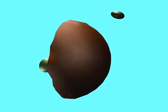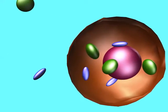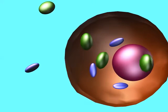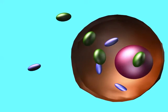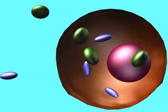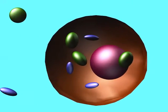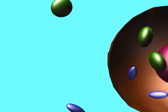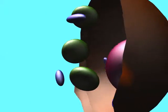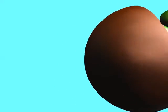Eukaryotes owe their origin to an endosymbiotic event, where cells began to live inside a larger cell in a mutually beneficial relationship. The endosymbionts became the mitochondria, which would help the eukaryotic cell break down its foodstuffs using oxygen.